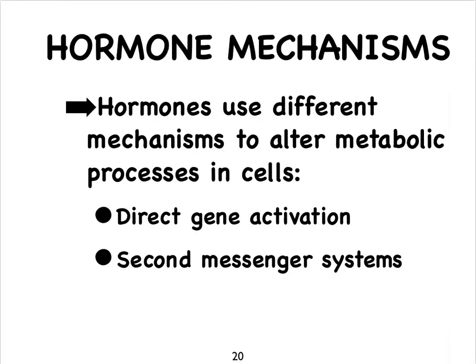So when hormones bind to their receptors, what exactly happens to our target cell? Remember when you learned about the impact of a neurotransmitter binding to its receptor on a postsynaptic membrane in the nervous system? Well, some neurotransmitters do something similar to hormones and depend on a second messenger system. But in addition to that, hormones can also directly activate genes — that's going to be our steroids, which can easily pass through the cell membrane and the nuclear envelope. These are your two major mechanisms for hormones, while neurotransmitters can also depend on the second messenger system.